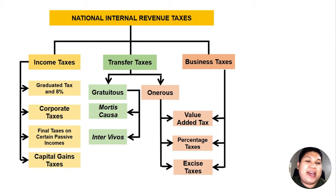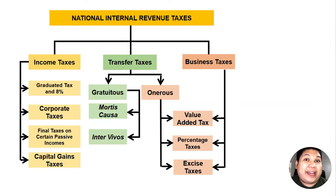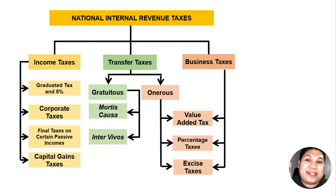There are two definitions of excise tax. Number one: it is a tax on sinful or luxurious products. The other definition is that excise tax is a tax on a right. Generally speaking, all these taxes — income tax, transfer tax, and business tax — are all excise taxes as to object, because these taxes are imposed on a right.